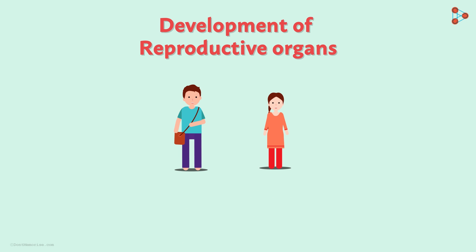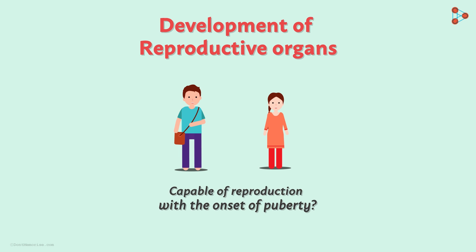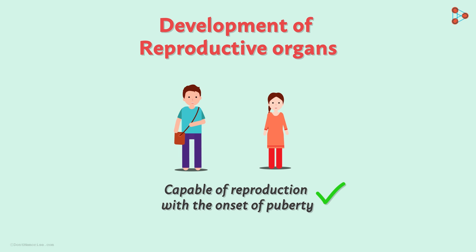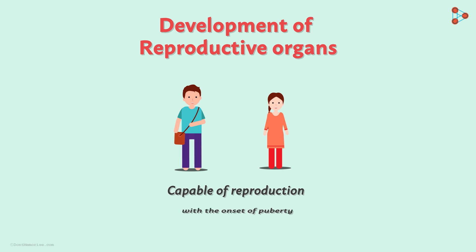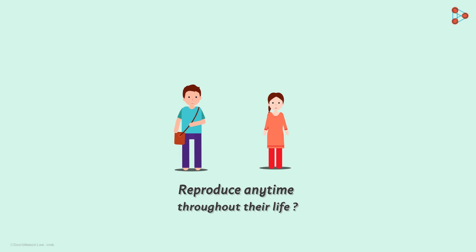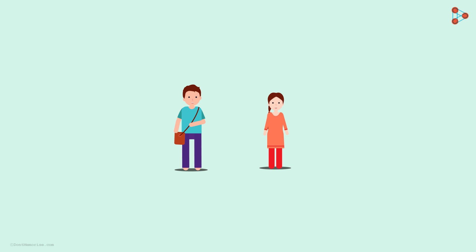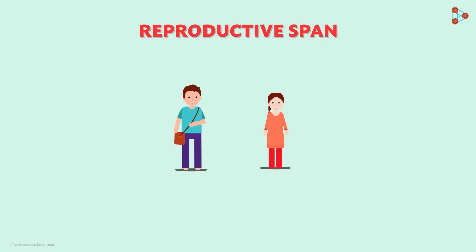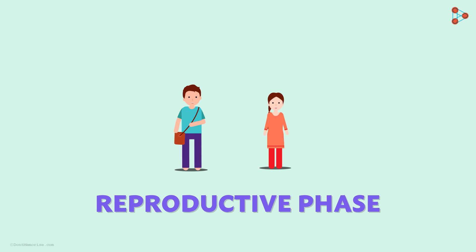Both males and females are capable of reproduction with the onset of puberty. However, they cannot reproduce anytime throughout their entire lives. The basic reason is that the case of males and females is different when it comes to the reproductive span. This is the concept of the reproductive phase that we need to address.